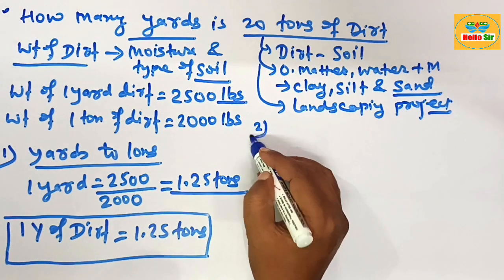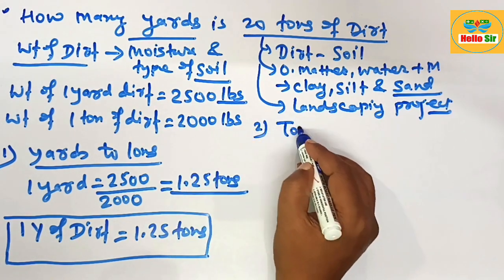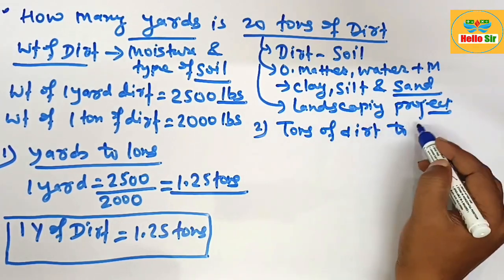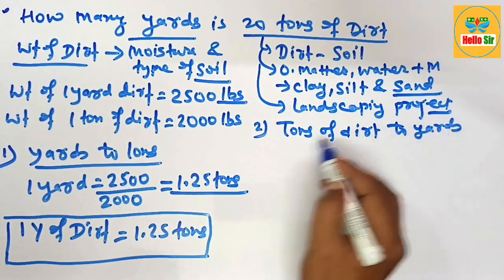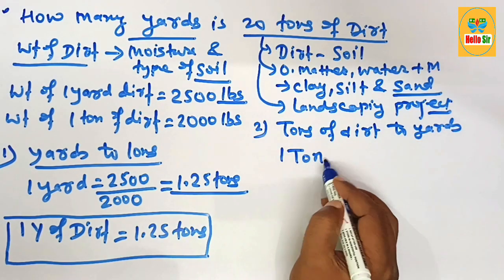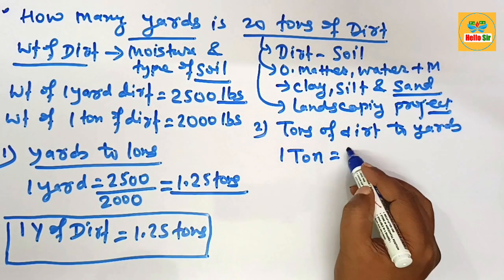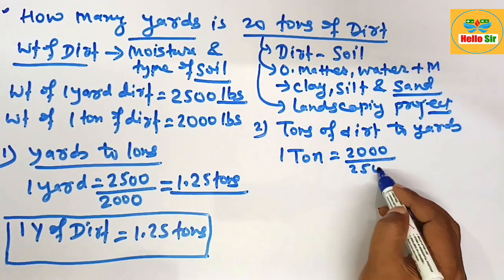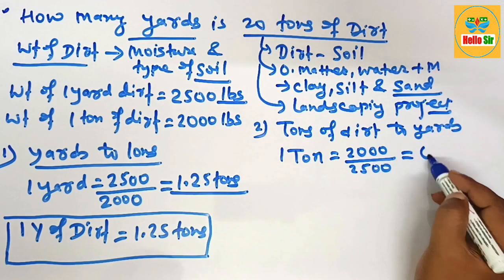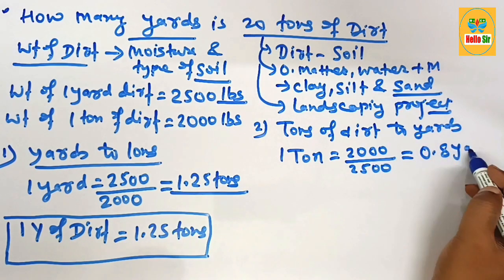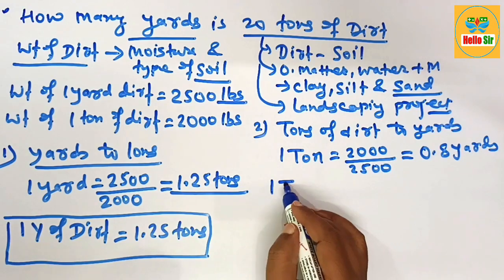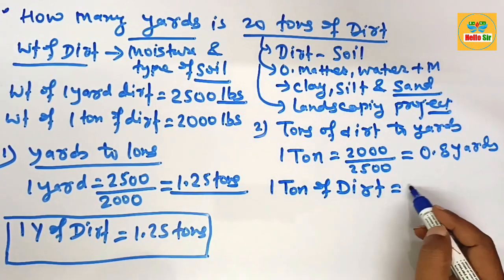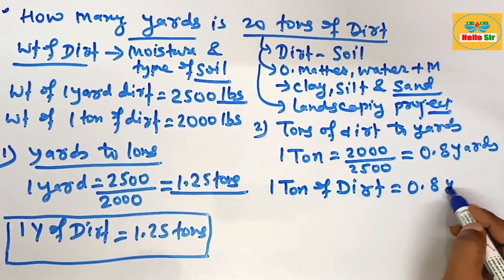Then you find tons to yards. Tons of dirt to yards. It means 1 ton equals 2000 divided by 2500, which comes to about 0.8 yards. So 1 ton of dirt equals 0.8 yards.